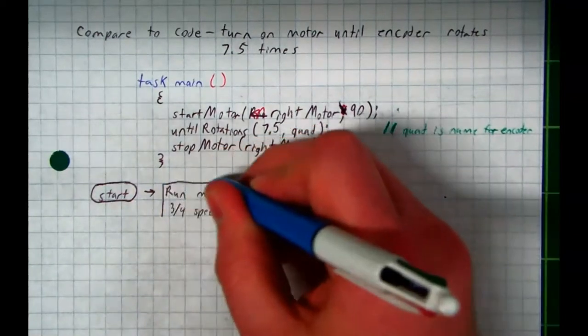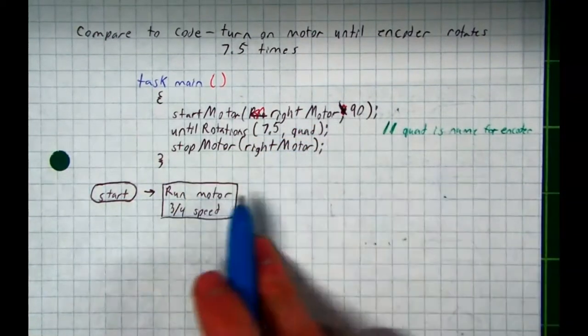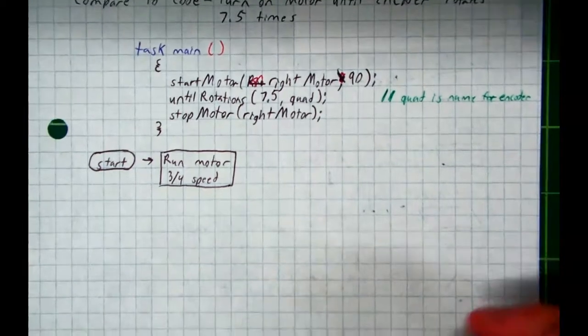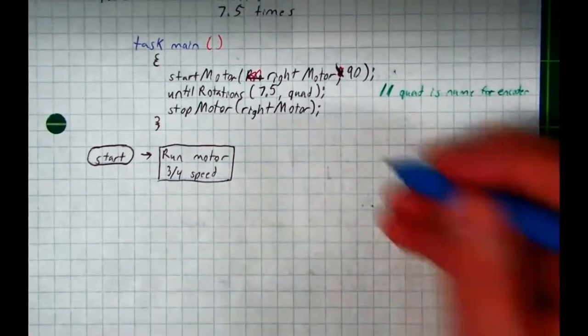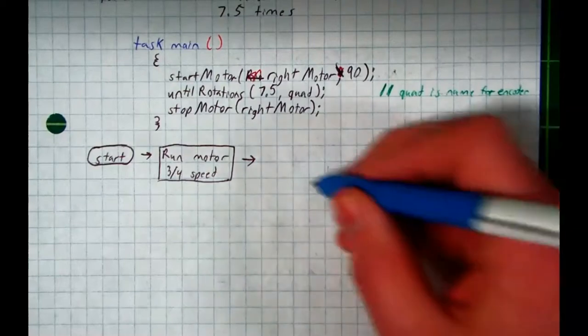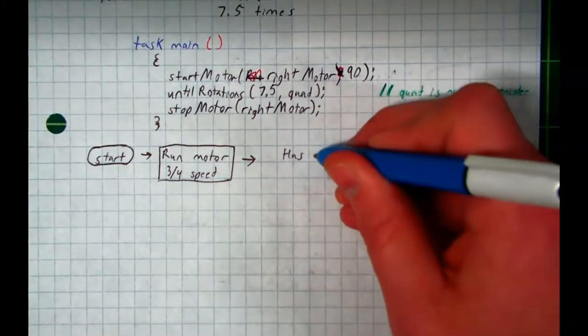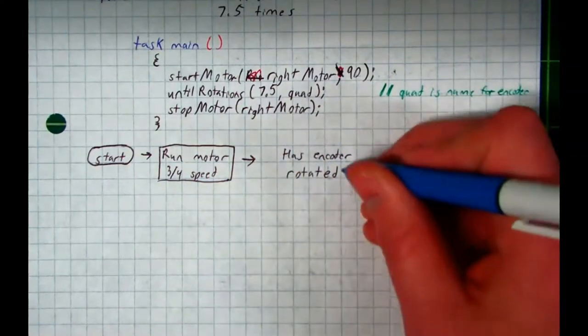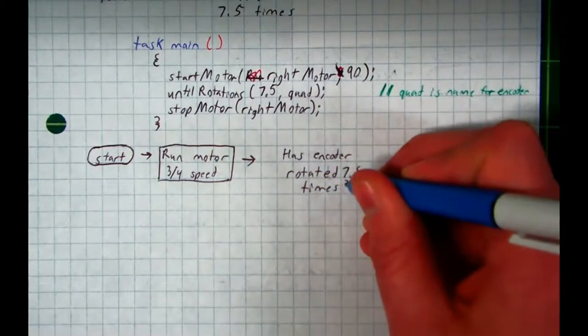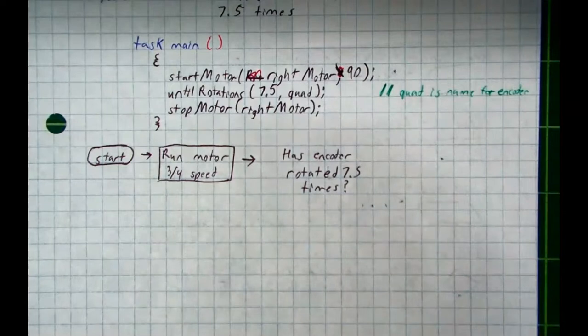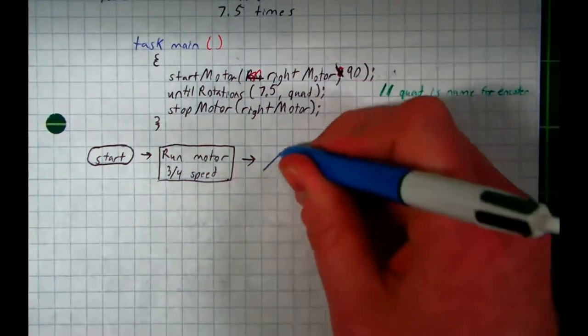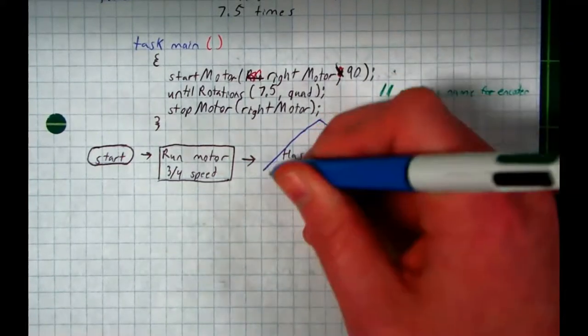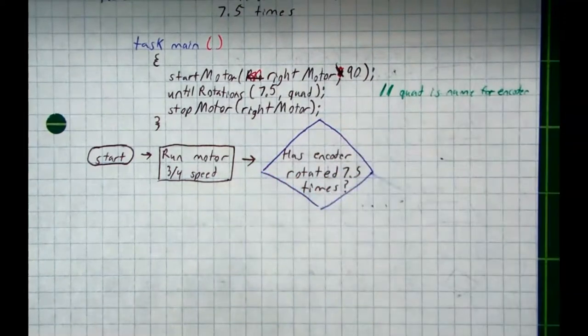You're going to see me write this a little weird. I suggest you watch me write it before you do, so you can make sure you fit it in a rhombus. But basically, ask yourself the question. Has the encoder rotated 7.5 times? And then draw yourself a rhombus or a diamond around it. And it's not going to be perfect. It might be a little messy. That is okay as long as you get the idea. That's the important part, not whether or not you can draw a perfect shape.